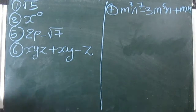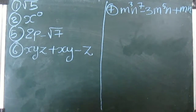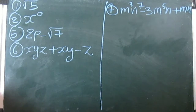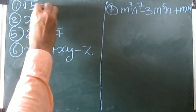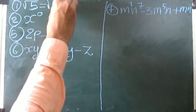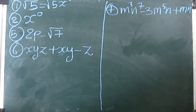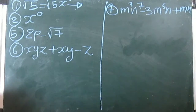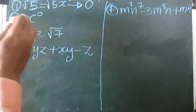Now we do question number four, which is asking us to write the degree of a polynomial. The first one is root five. It is a constant polynomial. Root five can be written as root five times x to the power zero. There is only one term and the power is zero, so the degree of this polynomial is zero.